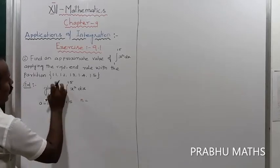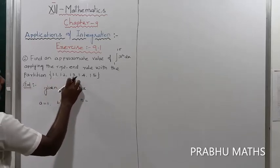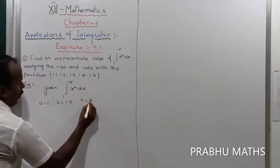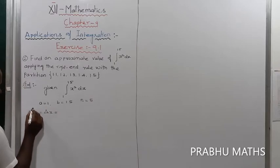Next, n equals, how many partitions? 1, 2, 3, 4, 5. So n equals 5.